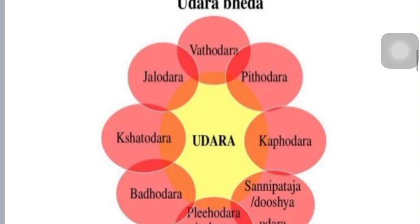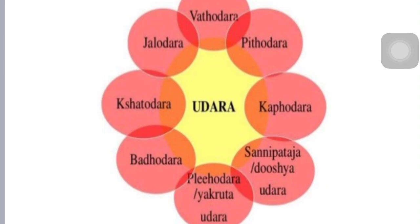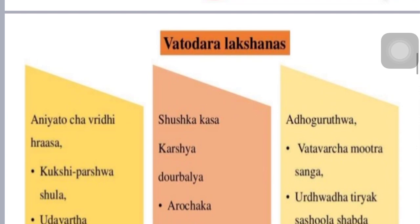Types of Udhar-roga: there are eight types — Vataja, Pittaja, Kaphaja, Sannipata, Plihodara, Yakrudodara, Baddhudara, and Chidrodara.